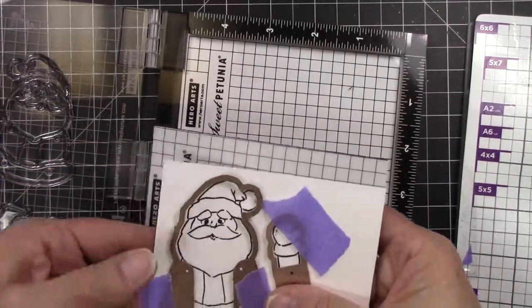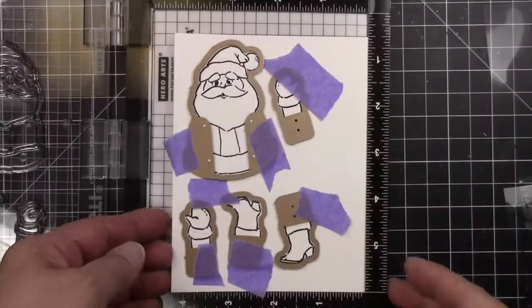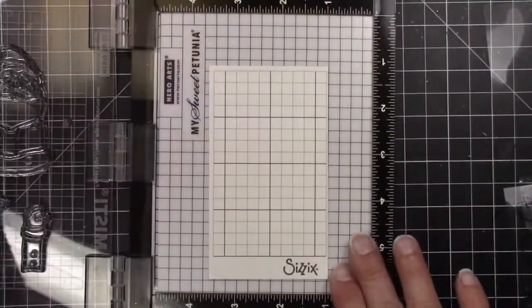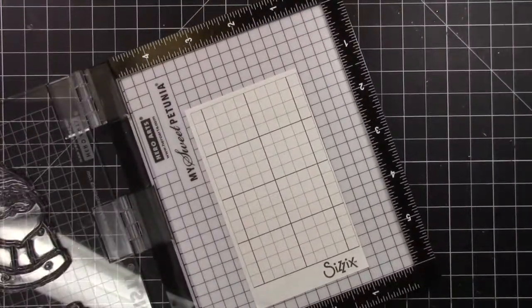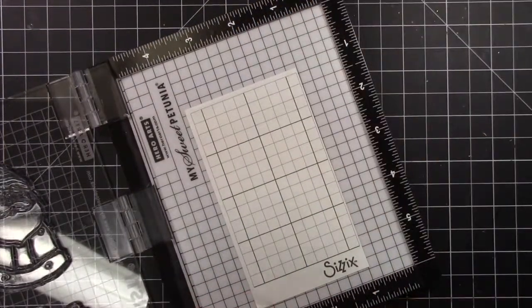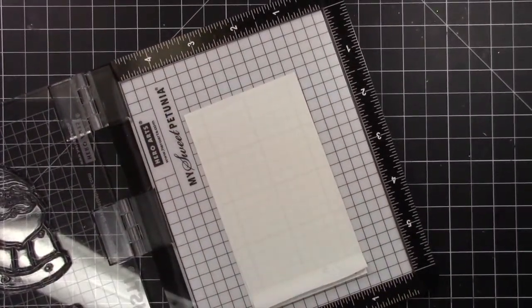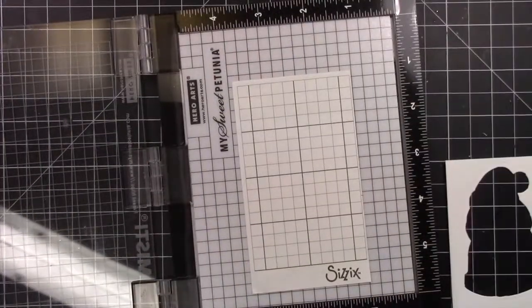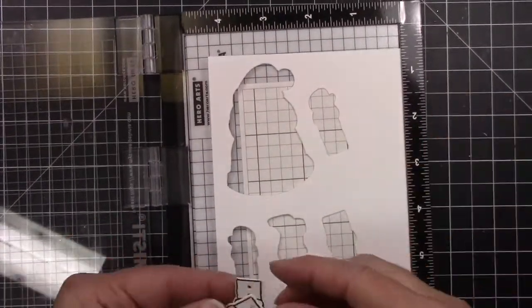This would also be a really cute set if you put them back to back and put some foam tape between them. You could make just little toys with it and not necessarily a card front. Now I always put back, or at least I try to put back, the protective page when I'm not using it.